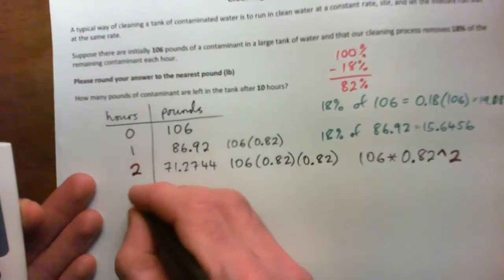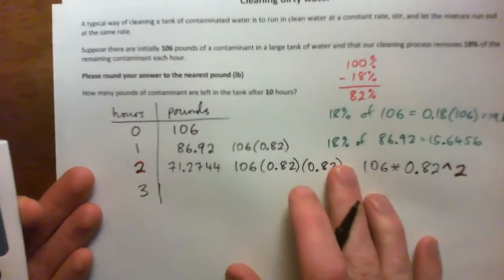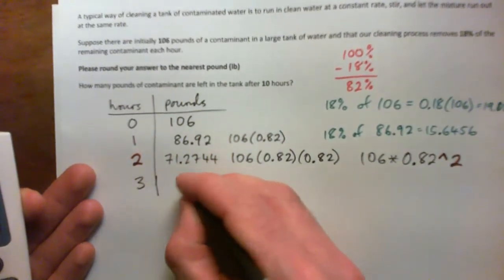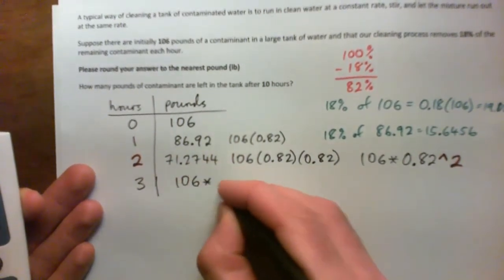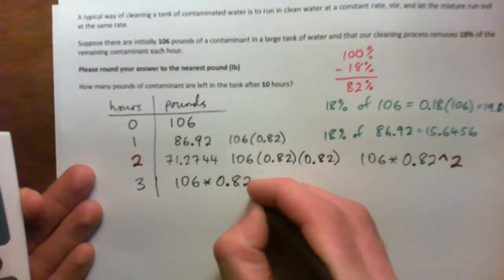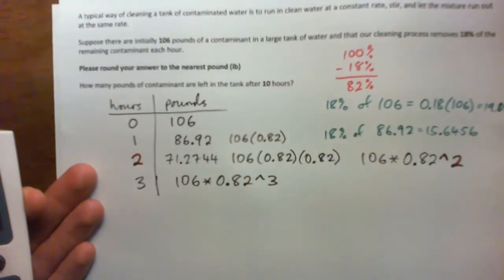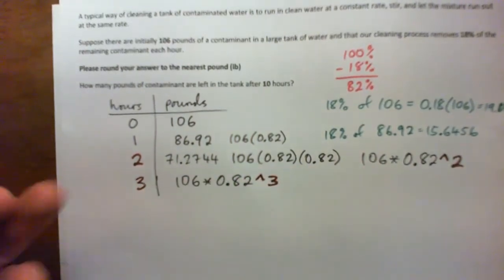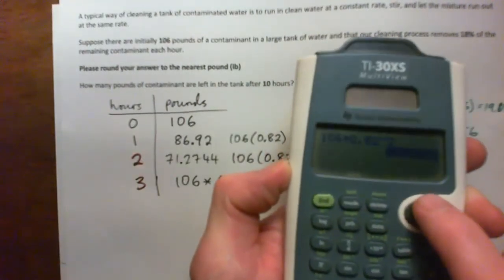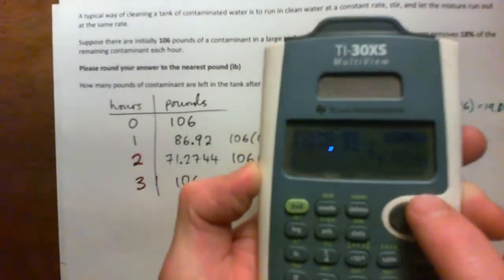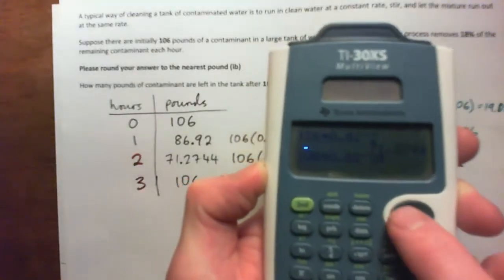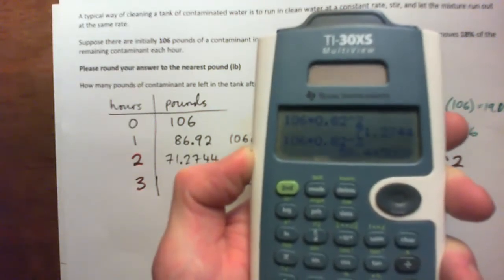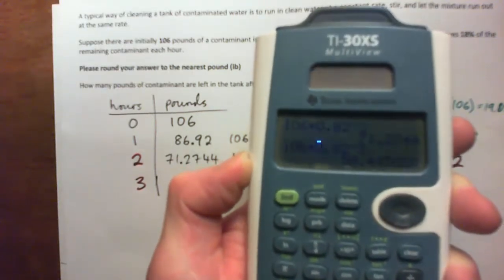And after three hours, what do you think the formula would be? Press pause and do that. Well, it's just 106 times 0.82 to the power of three. To the power of three. And that gives us what's left after three hours. I'm going to go up with my arrows, highlight that, press enter, type in a three instead of a two, press enter and I get 58.445.